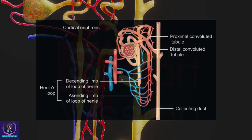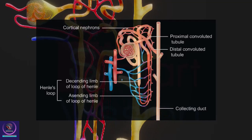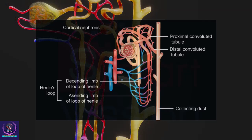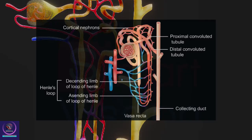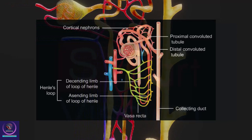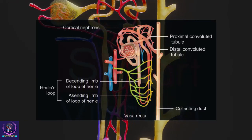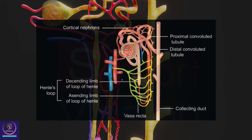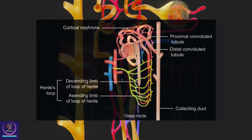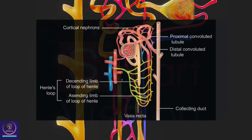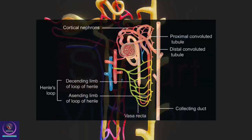Juxtamedullary nephrons: In some nephrons, the loop of Henle is very long and runs deep into the medulla. These are called juxtamedullary nephrons. Peritubular capillaries form a fine capillary network around the renal tubule, formed by the efferent arteriole emerging from the glomerulus. A minute vessel of this network runs parallel to Henle's loop, forming a U-shaped vasa recta. The vasa recta is absent or highly reduced in cortical nephrons.